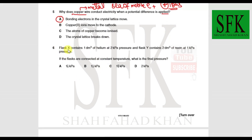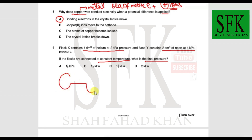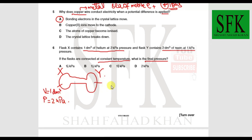MCQ 6: Flask X contains 1 dm³ of helium at 2 kPa pressure, and flask Y contains 2 dm³ of neon at 1 kPa pressure. If the flasks are connected at constant temperature, what is the final pressure? Draw a diagram: flask X with volume 1 dm³ at 2 kPa, flask Y with volume 2 dm³ at 1 kPa.